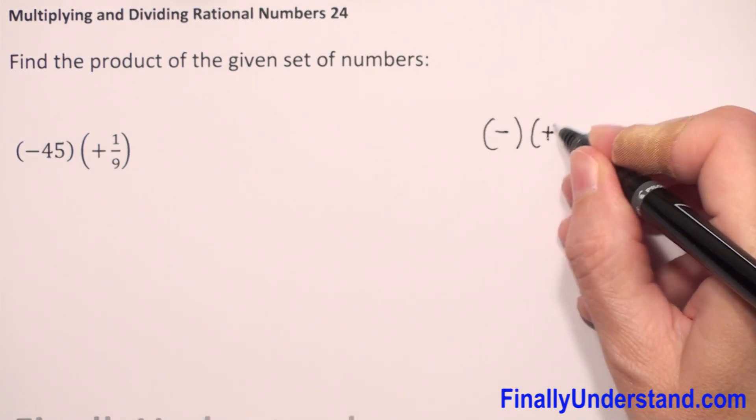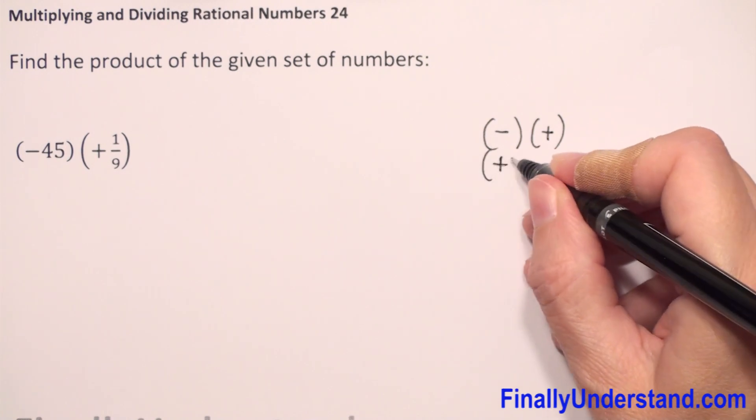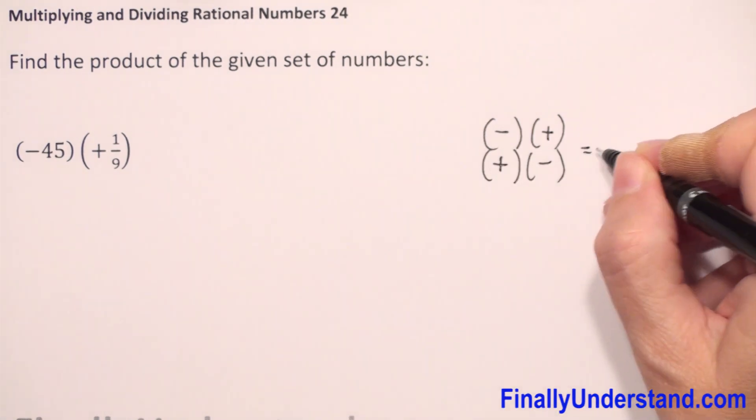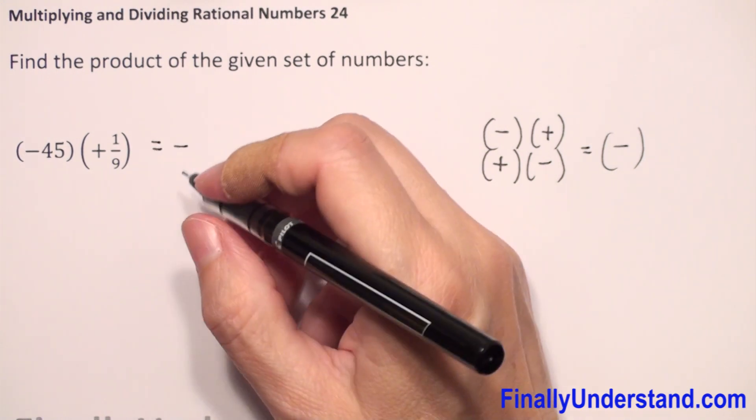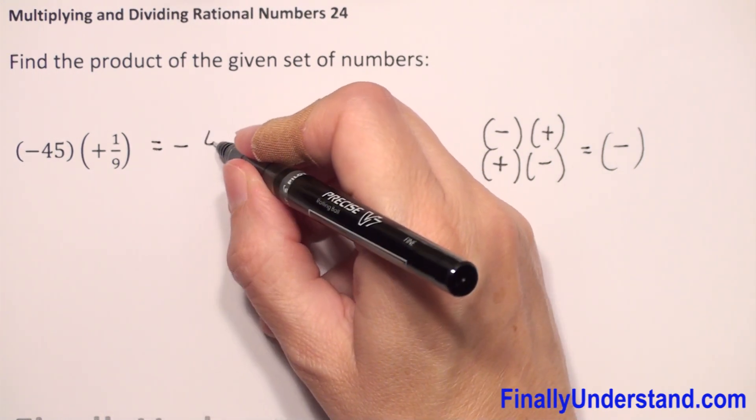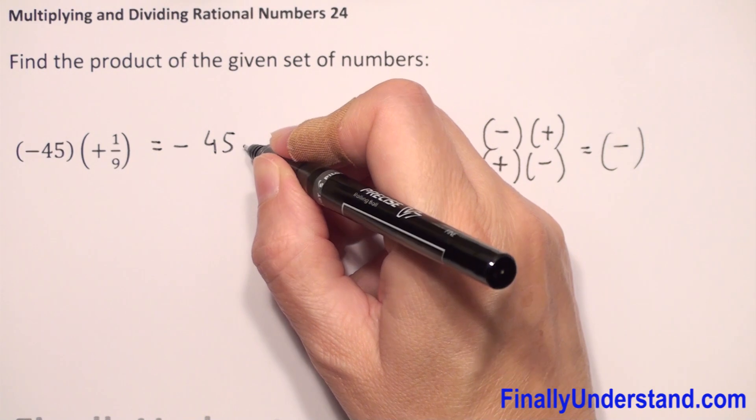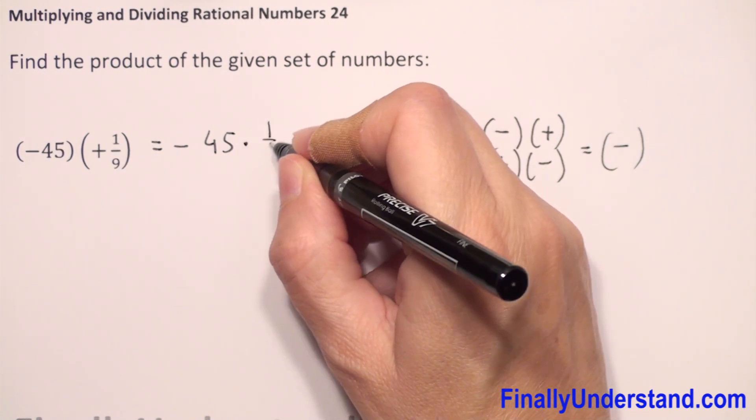So it will be a negative sign. Let me rewrite this: 45 times 1 over 9.